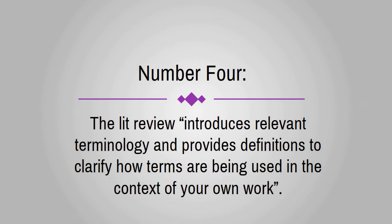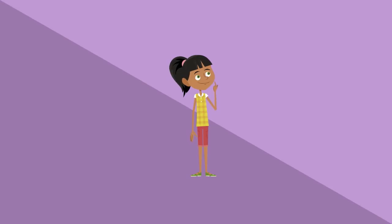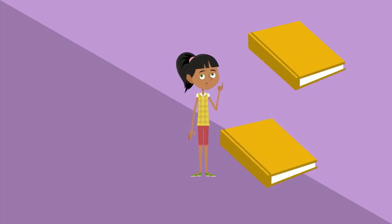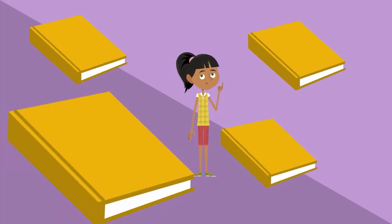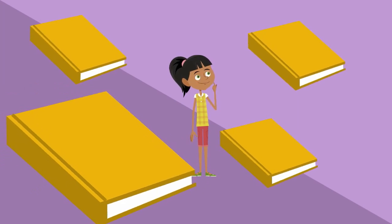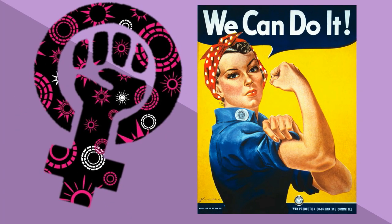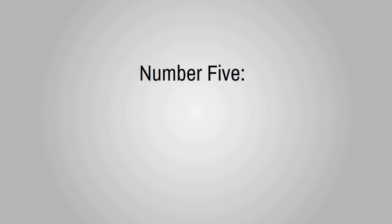Number 4. The lit review introduces relevant terminology and provides definitions to clarify how terms are being used in the context of your work. Clarifying how you use your key phrases is absolutely critical. And to do this, you need to explain where and how you developed your definitions. For example, there are countless ways to define feminism, so you need to develop a definition that suits your needs and explains how others may have defined it in the past.